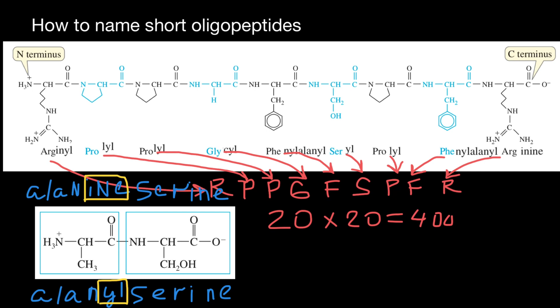So according to nomenclature, some proteins may have very long names, which would contain more than one million letters. And of course, we do not memorize them by their full names, but instead using three-letter abbreviation or one-letter abbreviation, which even shorter or for short oligopeptides, again, up to 10 amino acid residues, we can use these names.